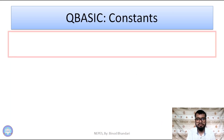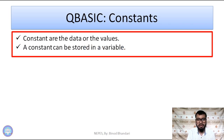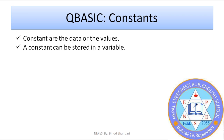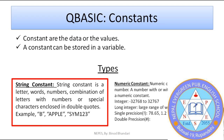QBasic constants: constants are the data or values. A constant can be stored in a variable, and variables are the names of memory locations. There are two types of constants: string constant and numeric constant. A string constant is letters, words, numbers, or a combination of letters with numbers or special characters, enclosed in double quotes. Anything enclosed in double quotes is a string constant.